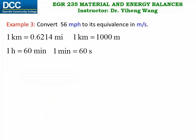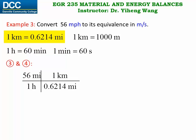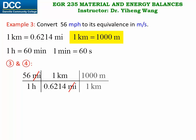Now we are more experienced, so we're going to combine steps three and four and write only one equation that includes all the conversion factors. We start with our given quantity written as 56 miles over one hour. First we use the mile-to-kilometer equality to cancel out miles, writing the conversion factor with mile on the denominator. Then we use the kilometer-to-meter equality so that kilometer can be canceled out, since our desired unit for length is meters.